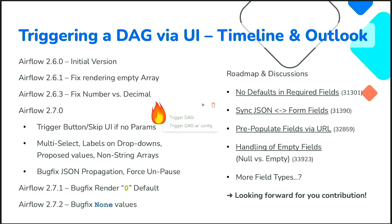Is it possible to have dynamic values — loading default values or options from a function or API? That's something you'd need to do as custom code, and you need to be careful because params are parsed at DAG parsing time. Dynamic lookups at parse time would slow down DAG processing. Technically you'd probably need to inherit the params object. The target is to eventually do lazy loading for security reasons, so that the lookup happens on the fly when the user opens the form, preventing DAG parsing slowdown.